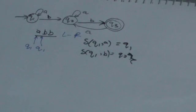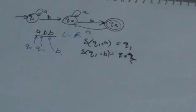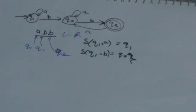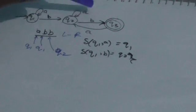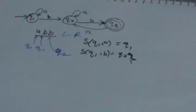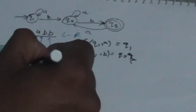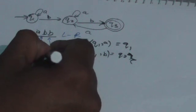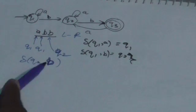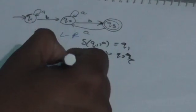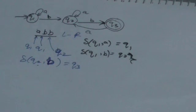Now the machine is in state q2 and has to read the next input symbol 'b'. When it is in state q2 and reads 'b', it transits to state q3, which is the final state. So after reading this 'b', the machine jumps from q2 to q3.